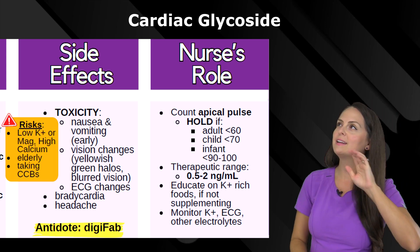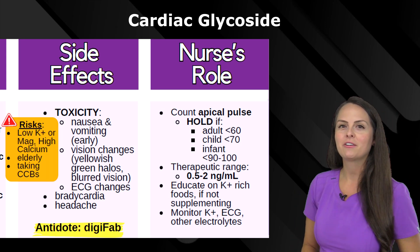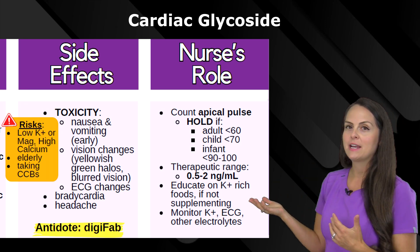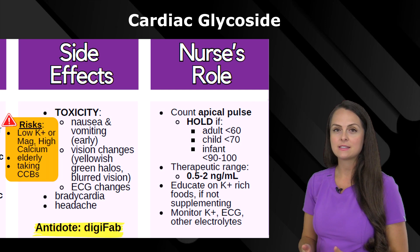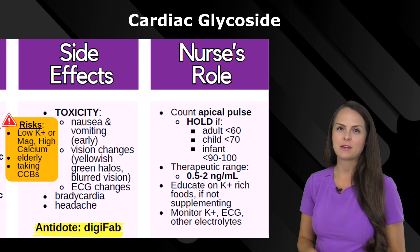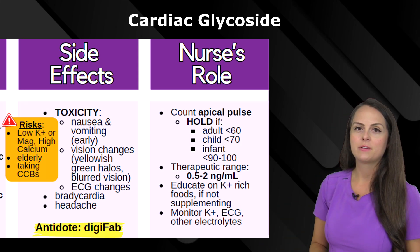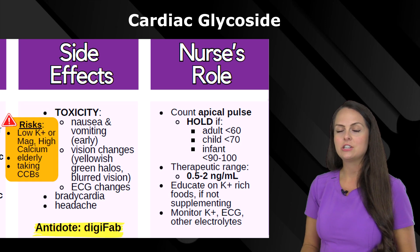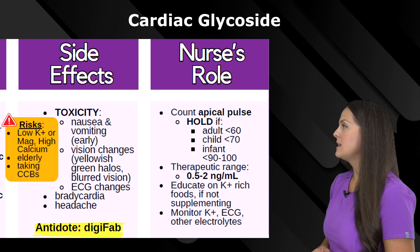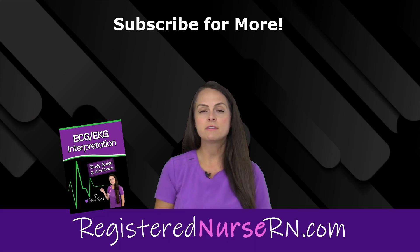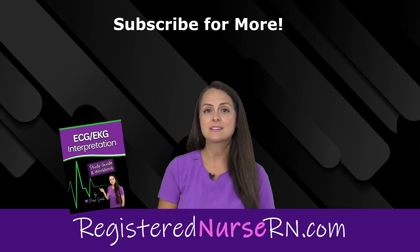Again, what was that therapeutic range? It was 0.5 to 2 nanograms per milliliter. You want to make sure your patient is consuming foods rich in potassium — a lot of times patients will be on a potassium supplement while taking this. Monitor the potassium level when ordered, watch the ECG for any changes, and make sure their electrolytes are within range. That wraps up this video on cardiac medications. If you'd like to watch more videos in this pharmacology series, you can access the link below.